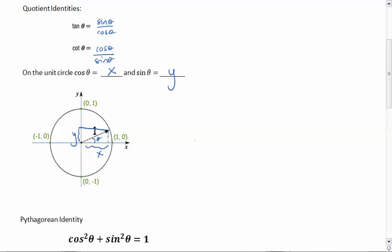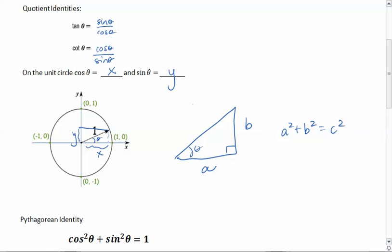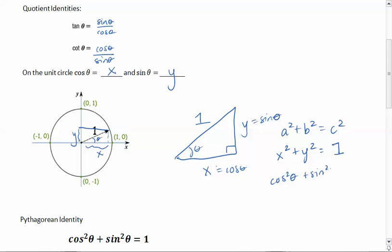Let's think about the Pythagorean Theorem for a second. If we have a right triangle with sides a, b, and c, we know that a squared plus b squared equals c squared. If we look at the unit circle and form this triangle, treating the angle as theta, then our c is 1 — our radius. Our side a is x, which equals cosine of theta, and our side b is y, which equals sine of theta.